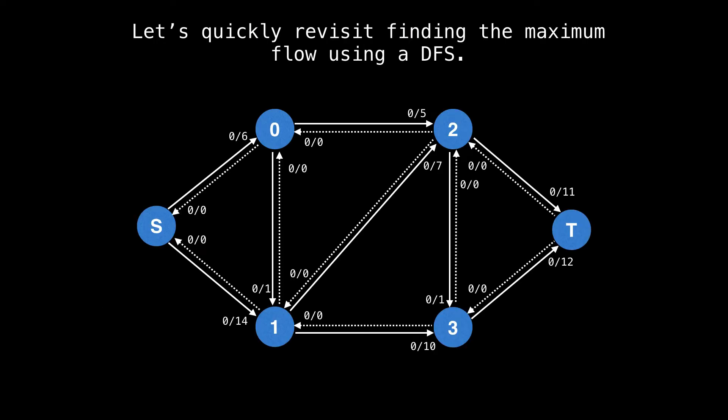Just before we dive into capacity scaling, I want to quickly revisit finding the max flow using a depth first search and the issues surrounding that. I keep coming back to this because I think it's important that we understand the intuition behind why all these new max flow algorithms were developed and why they came about. When we're looking at finding augmenting paths, the worst case is when we can only augment the flow by one unit.